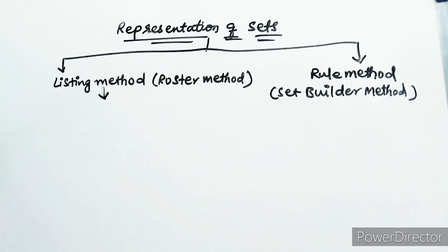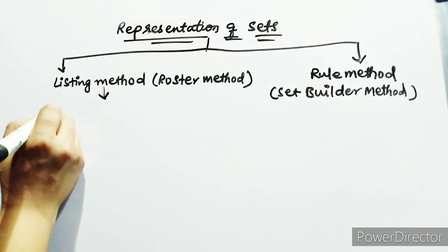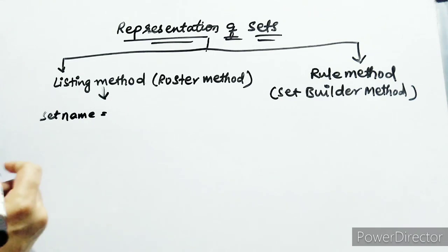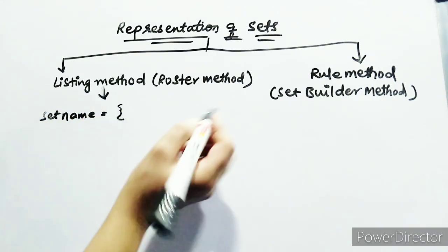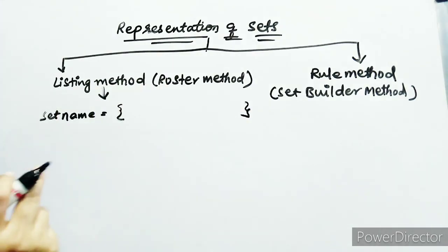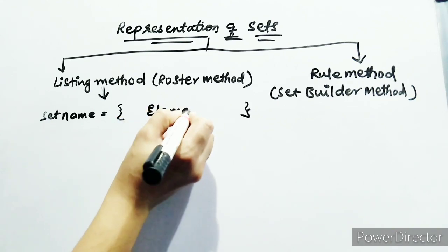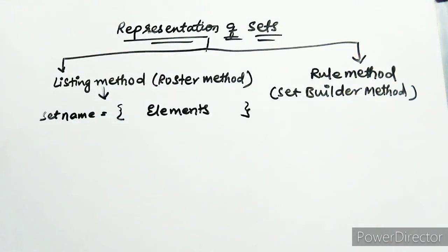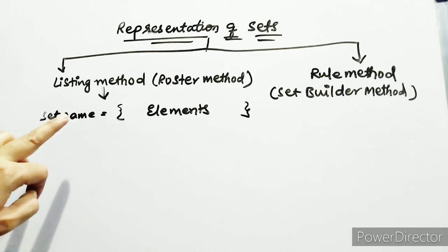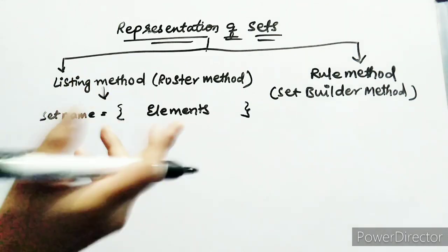First, we will discuss the listing method. In the listing method, you are giving the list of elements in a set. The syntax for writing your listing method is: write the set name, followed by an equal sign, and you must use curly braces — opening and closing curly braces — in which you write the elements. The syntax for the roster method is: set name is equal to, with all elements enclosed in curly braces.